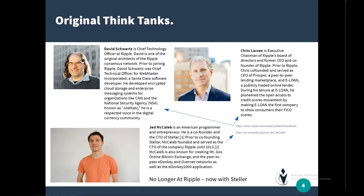David Schwartz is Chief Technology Officer at Ripple and one of the original architects of the Ripple Consensus Network. Prior to joining Ripple, he was CTO for Webmaster Inc., a Santa Clara software developer, where he developed encrypted cloud storage and enterprise messaging systems for organizations like CNN and the National Security Agency. Known as Joel Katz, he is a respected voice in the digital currency community — a guy whose prior experience included working for the NSA.